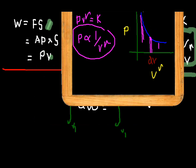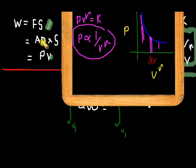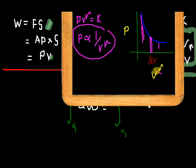We know that work is equal to F into s. So work — force can be written as area into pressure, into s. Area into s, that is displacement, will be equal to volume. So work can be written as P into V. So we have to find the product of P into V raised to gamma.